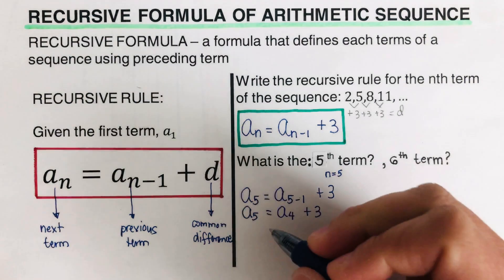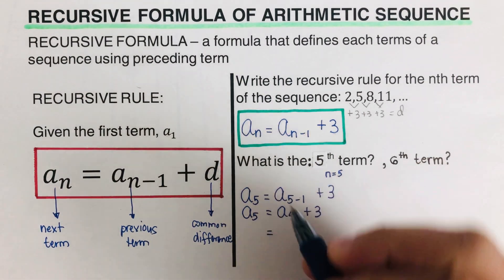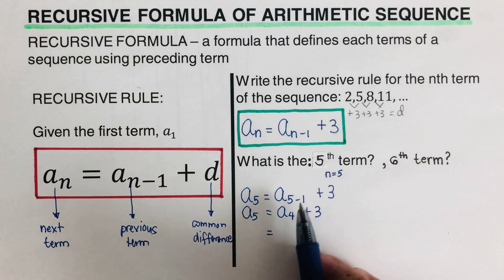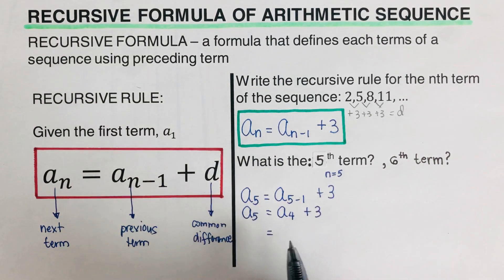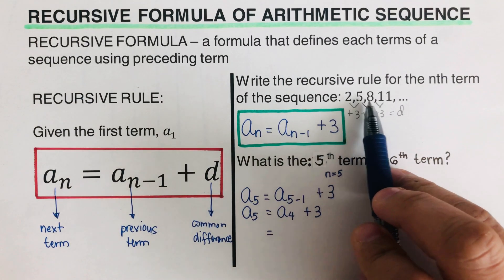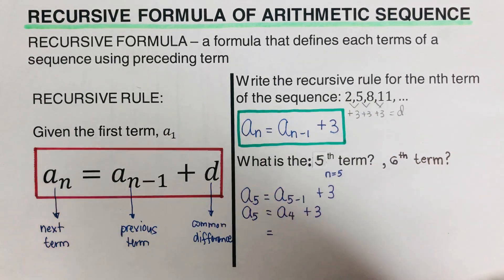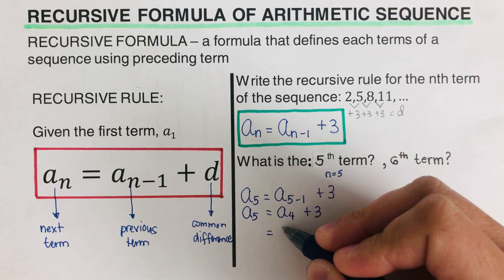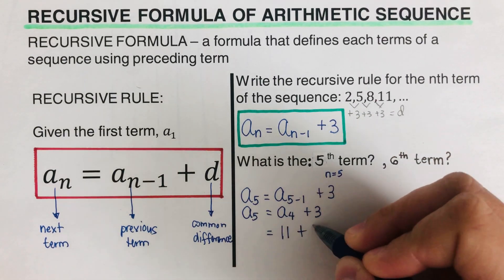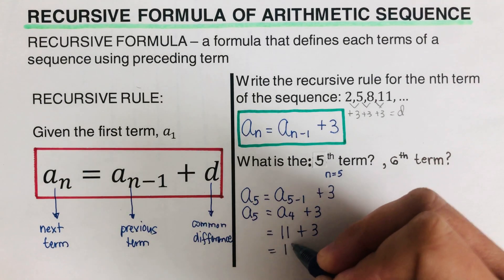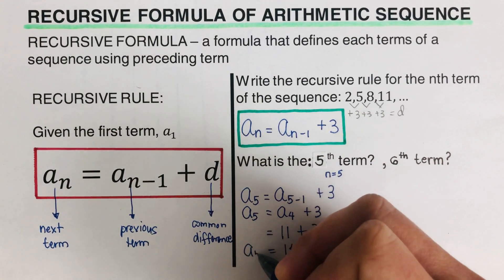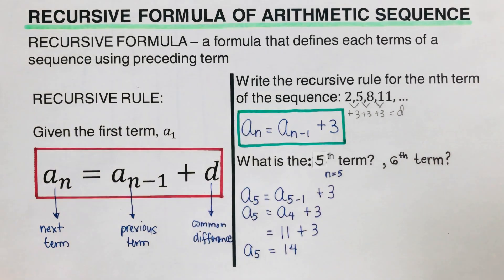We plug in the values from the sequence. Looking at the sequence, a1, a2, a3, a4 — a sub 4 is 11. So 11 plus 3 is 14. Therefore, a sub 5 is 14.